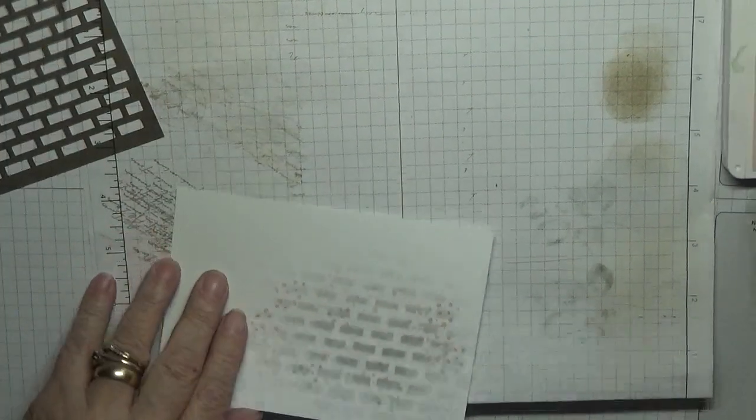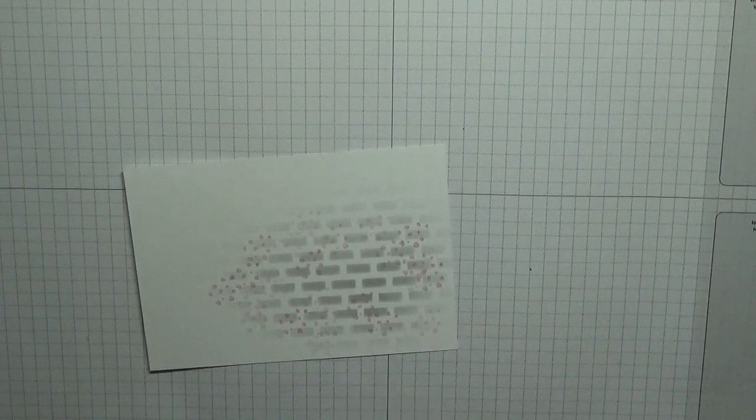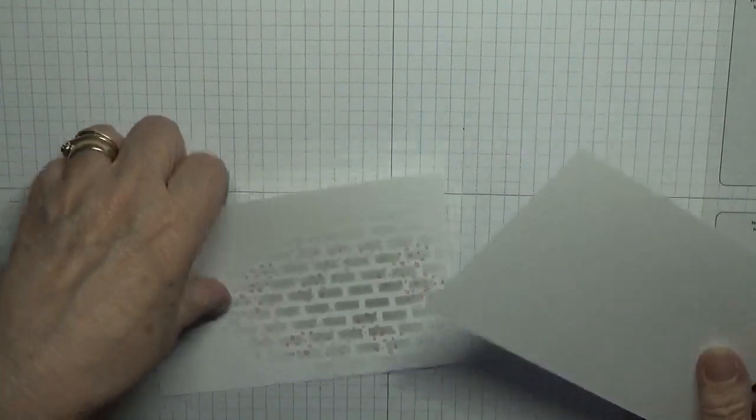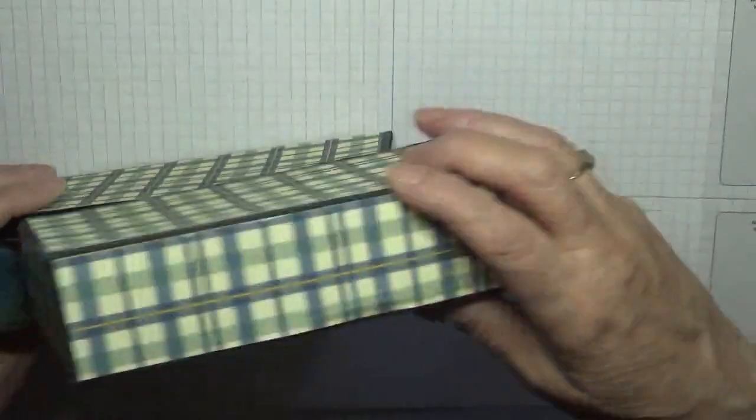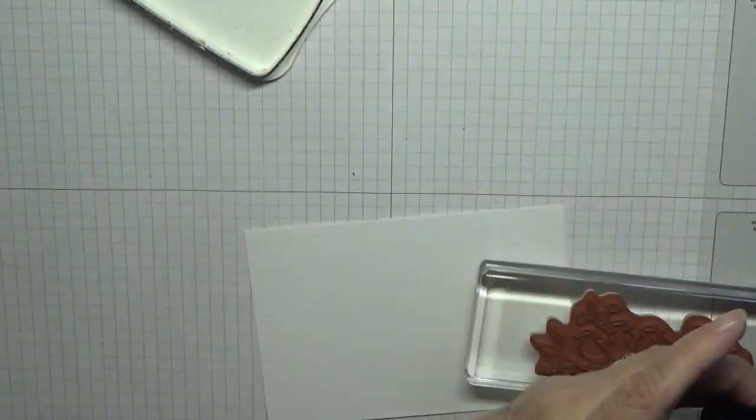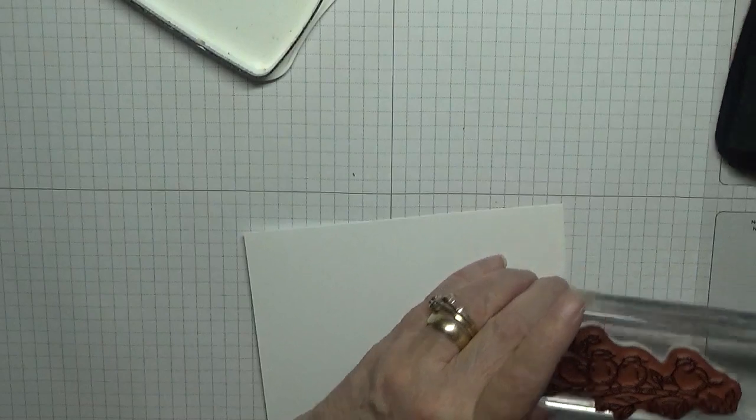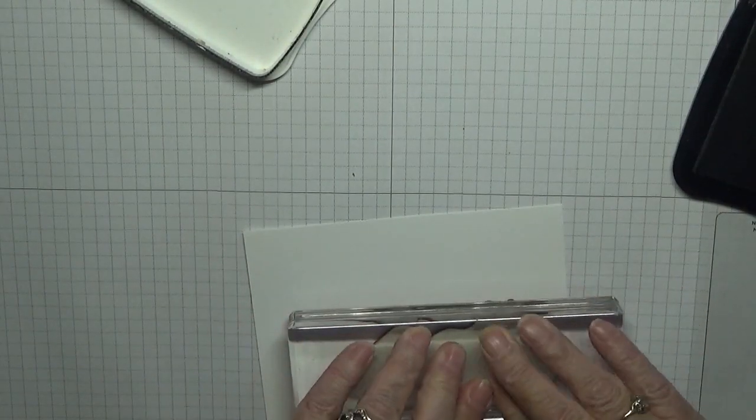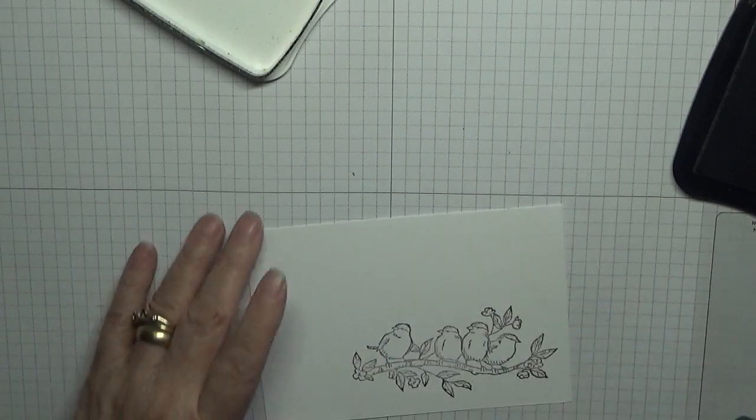So that's that bit done, the background. Get rid of that, put that to one side. Right, what we do need is a scrap card. Our memento black and our birds. Ink up the birds and stamp them down. All right.